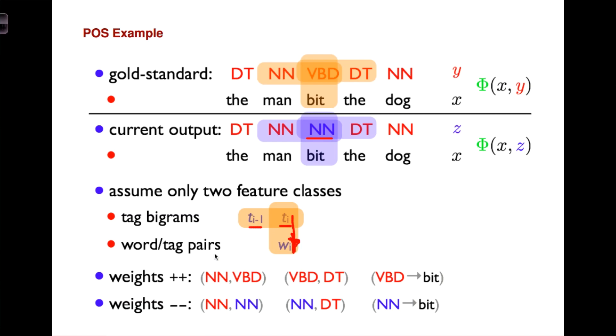And so the features that will get higher weights as a result of our structured perceptron update will be the transitions going from noun to verb, because that was in the true sequence but not in the wrong sequence, verb to determiner, and verb to bit. So these are all the things that we should have seen. But the things that we predicted that ended up being wrong will get smaller weights. So noun to noun will get a smaller weight, noun to determiner will get a smaller weight, and noun to bit will get a smaller weight as well.